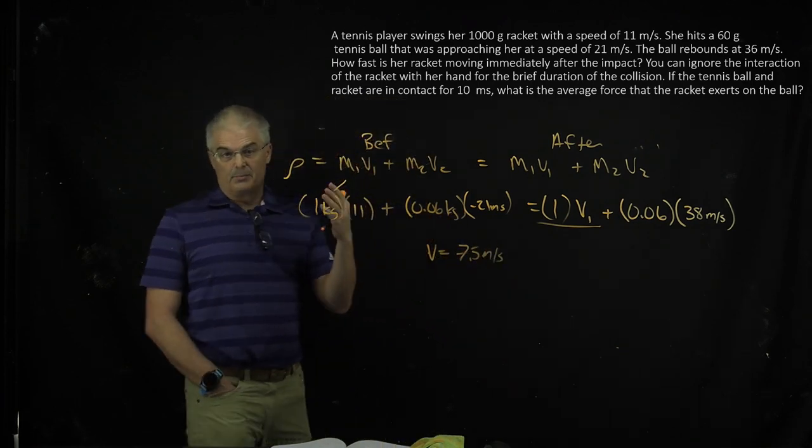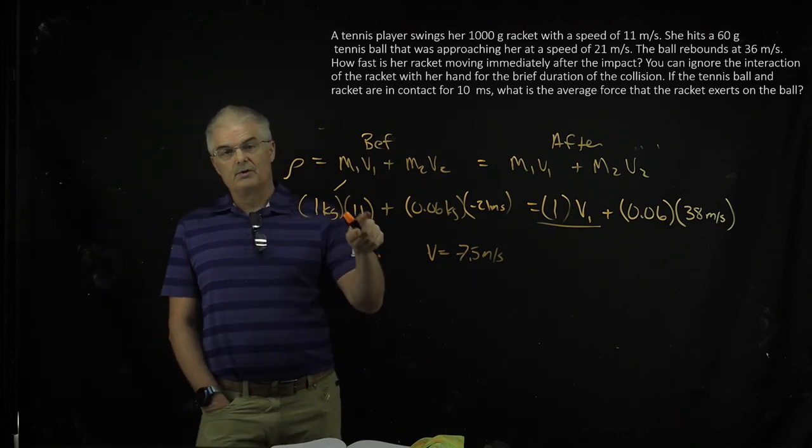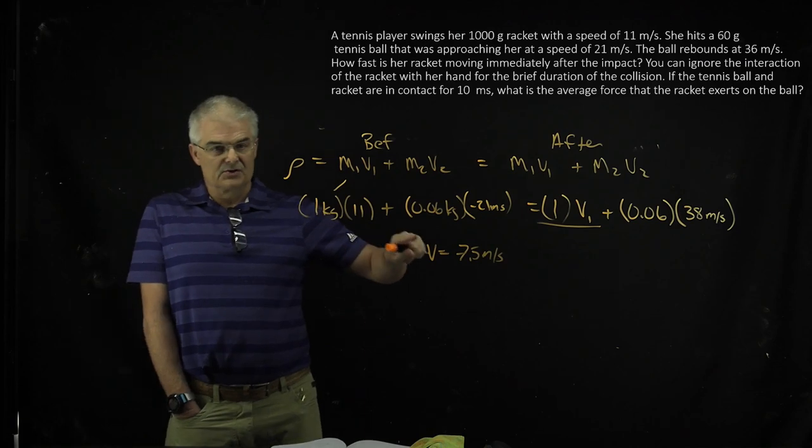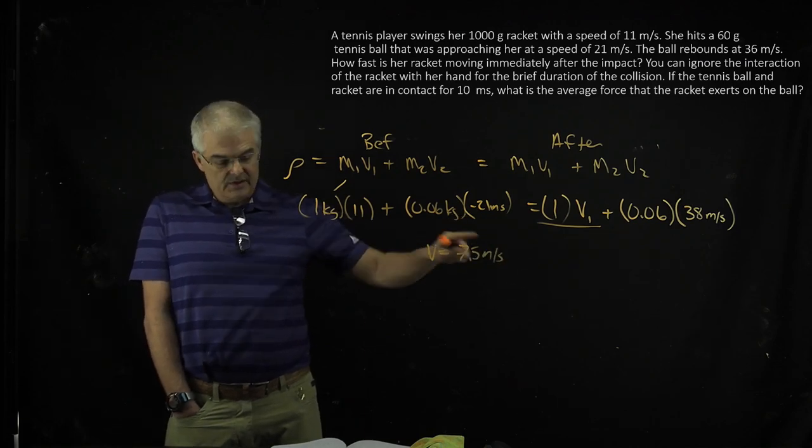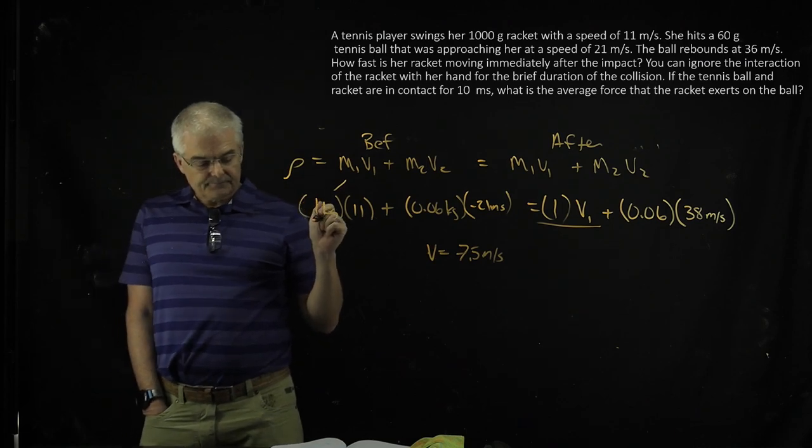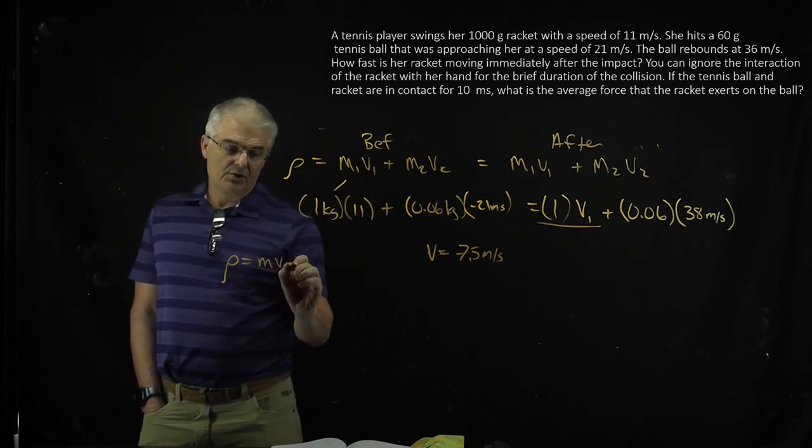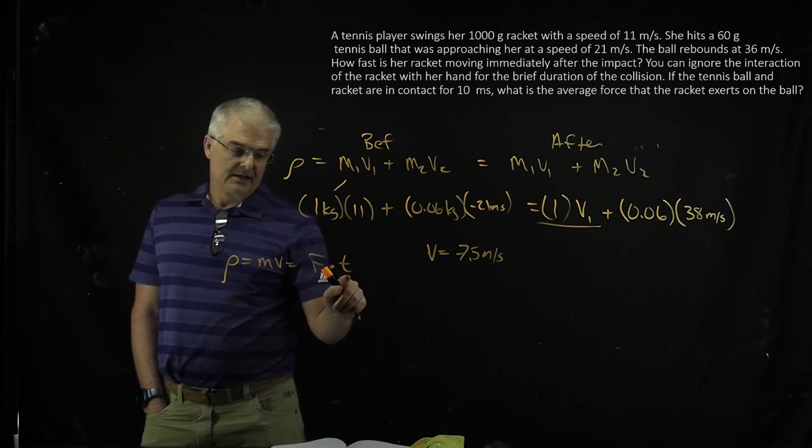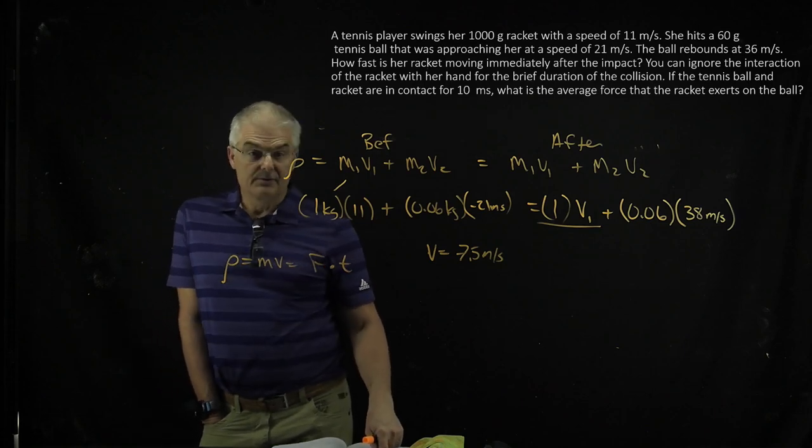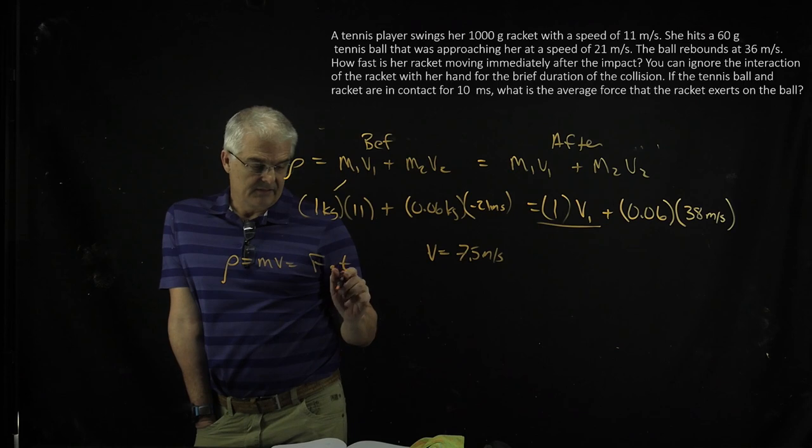So that's the answer to the part if the tennis ball and the racket are... So the next question is, what would be the force exerted, the average force? And so if you recall, momentum equals MV, but it also equals force times time. Now you know what the time is. They gave you the time. It was 11 milliseconds. I have 11. The paper says 10, but that's fine.